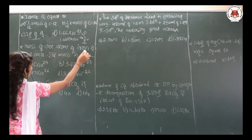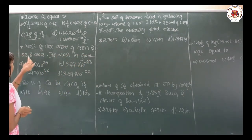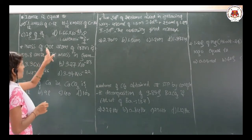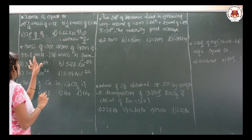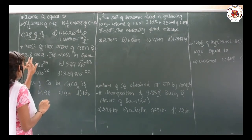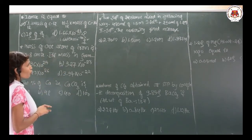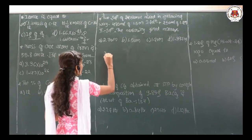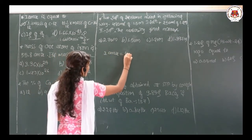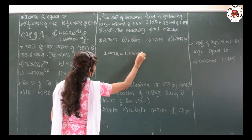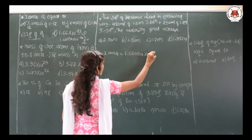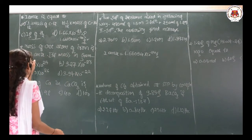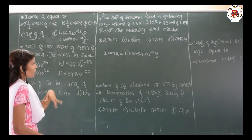The mass of 1 atom of iron is 55.8 amu — find its mass in grams. The question is that we have been given the mass of 1 atom of iron in terms of amu, that is 55.8 amu, and we have to calculate its mass in terms of grams. It is very simple: we know that 1 amu equals 1.66054 × 10⁻²⁴ grams.